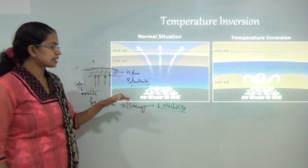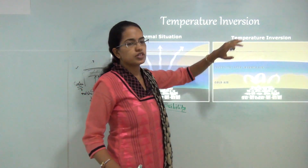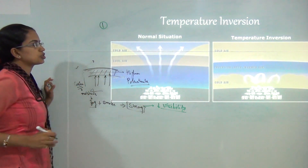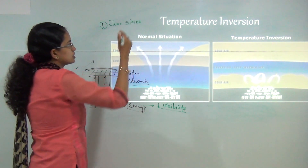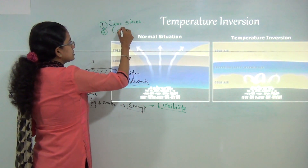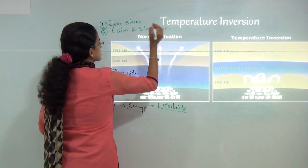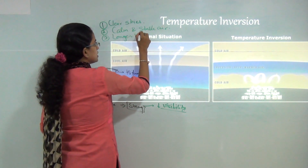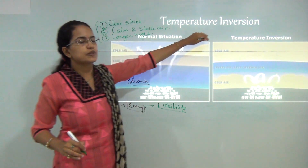There are certain characteristics which must be fulfilled for temperature inversion to take place. Three basic characteristics: first, you should have clear skies — it shouldn't be cloudy, since clouds would obstruct the heat passing down. Second, you need calm and stable air conditions. These together set the stage for temperature inversion.